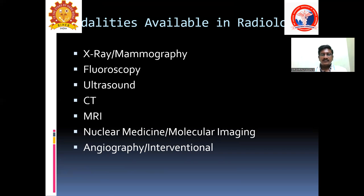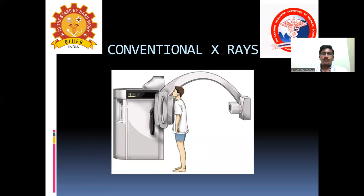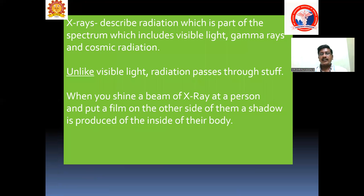Let us see one by one what is the basis of each investigation, what pathologies we can commonly see, and which investigation is specific for what type of pathology. X-rays are part of the electromagnetic spectrum — like visible light, gamma rays, and cosmic radiation — a group of radiation that can pass through the human body and produce an image on film, which is helpful for diagnostic purposes.